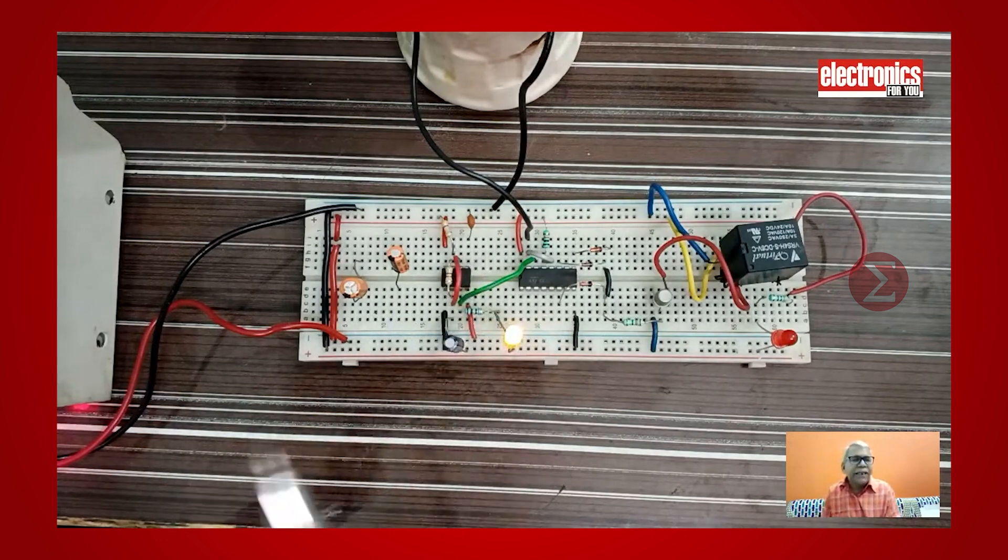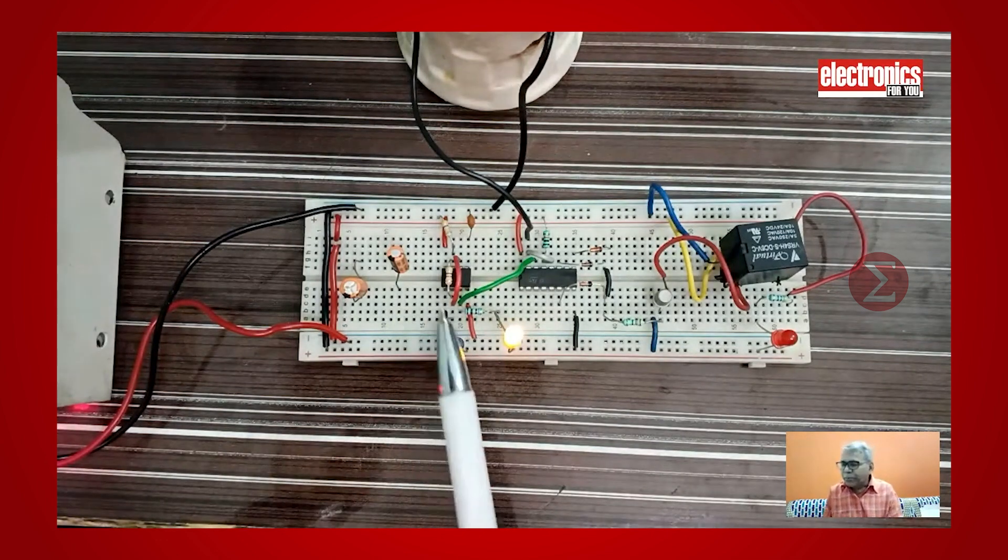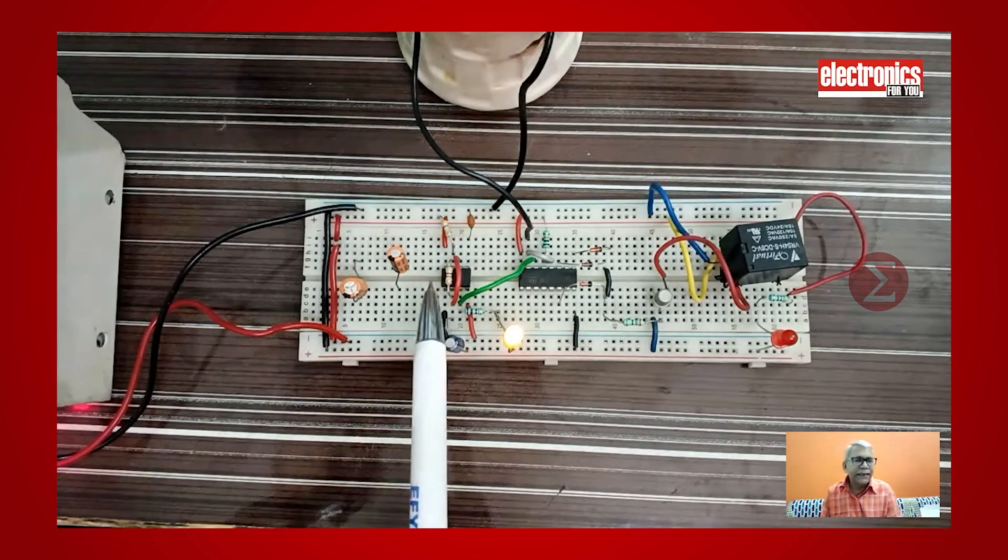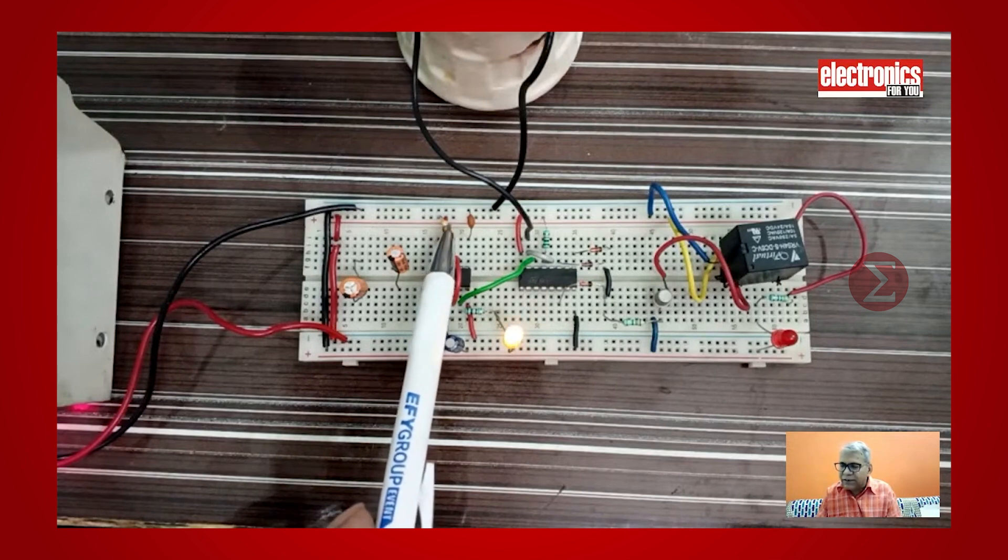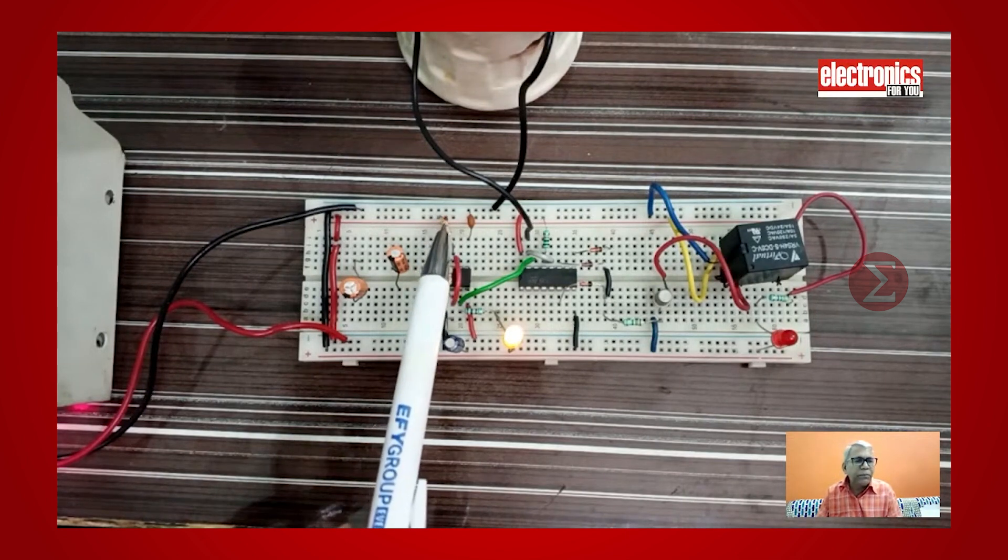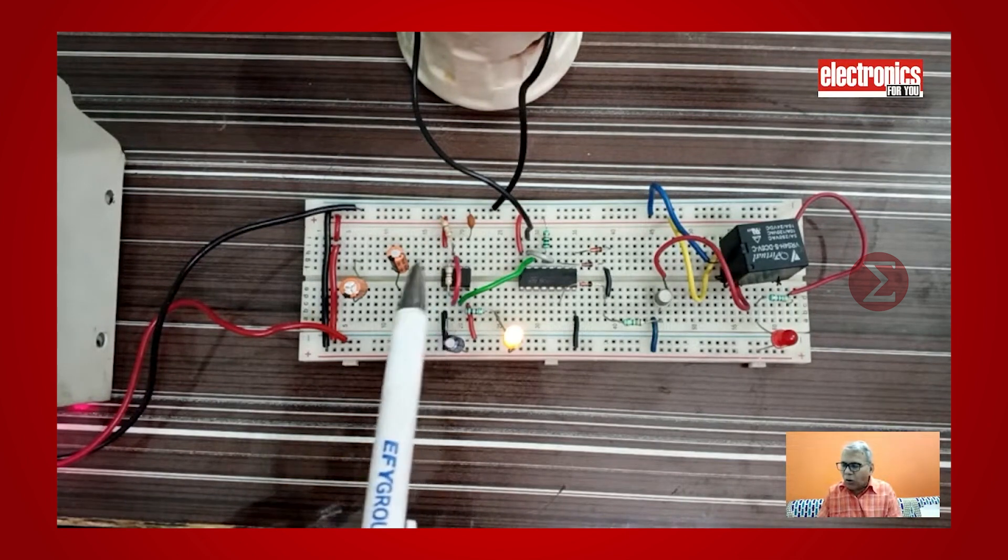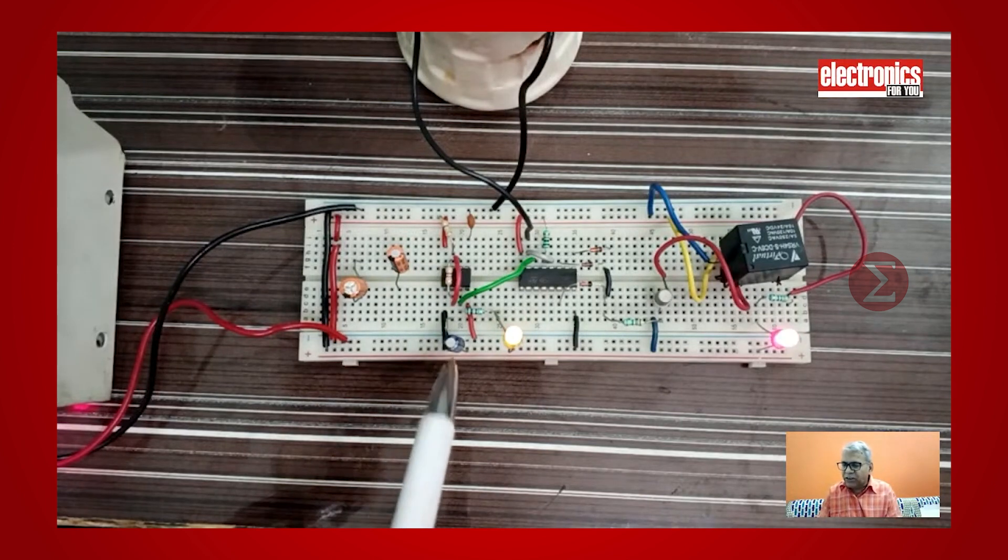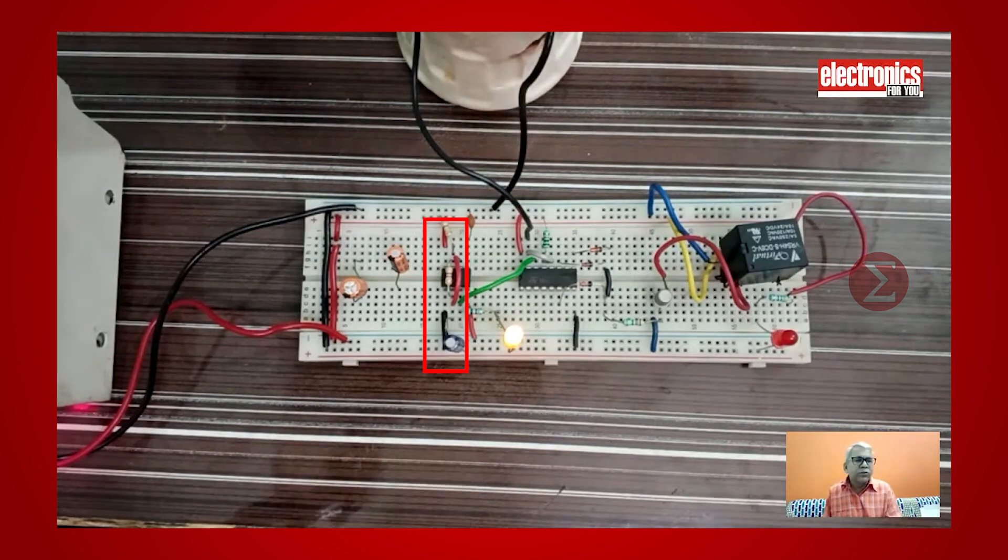We want our 555 timer to work as a stable multivibrator to generate clock. For that purpose, connect two resistors to pin number 7. Short pin 6 and 2 and connect a capacitor to it. This makes our 555 timer work as a stable multivibrator and creates a clock at pin number 3.